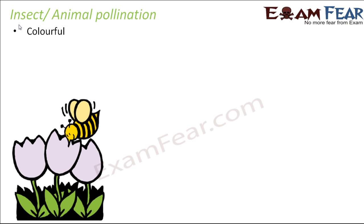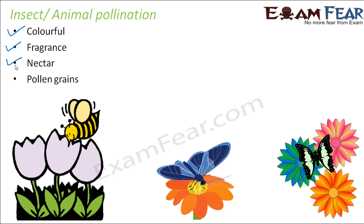In insect or animal pollination, some important characteristics of flowers are: colorful petals, because color attracts insects and animals towards them; and fragrance, because the sweet smell of a flower also attracts insects. Honeybees come to flowers in search of nectar for nutrition, and at the same time they help the plant by transferring pollen grains. Insects also sometimes feed on the pollen grains directly, and in doing so help transfer them from one place to another.